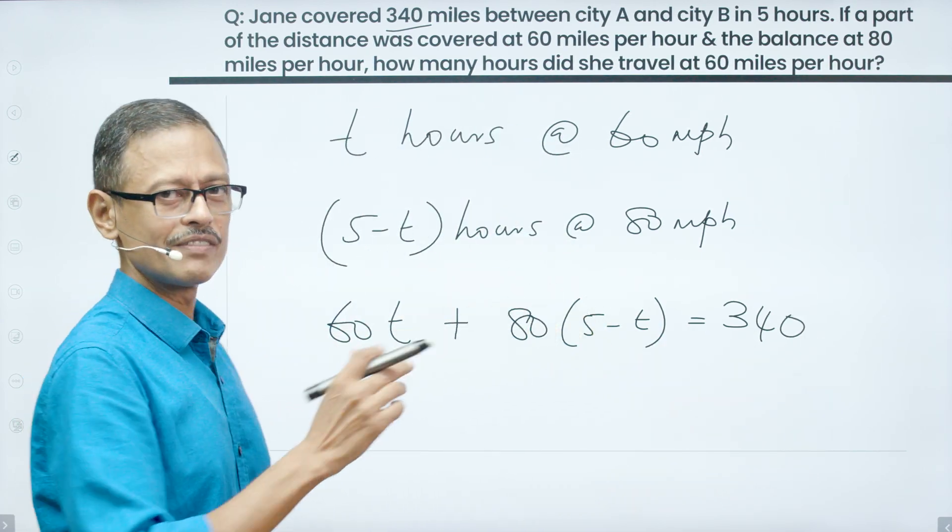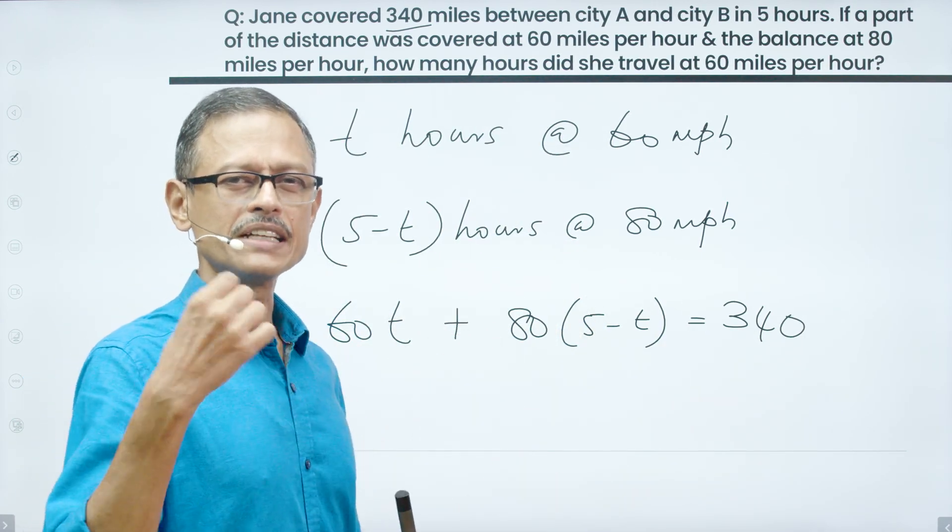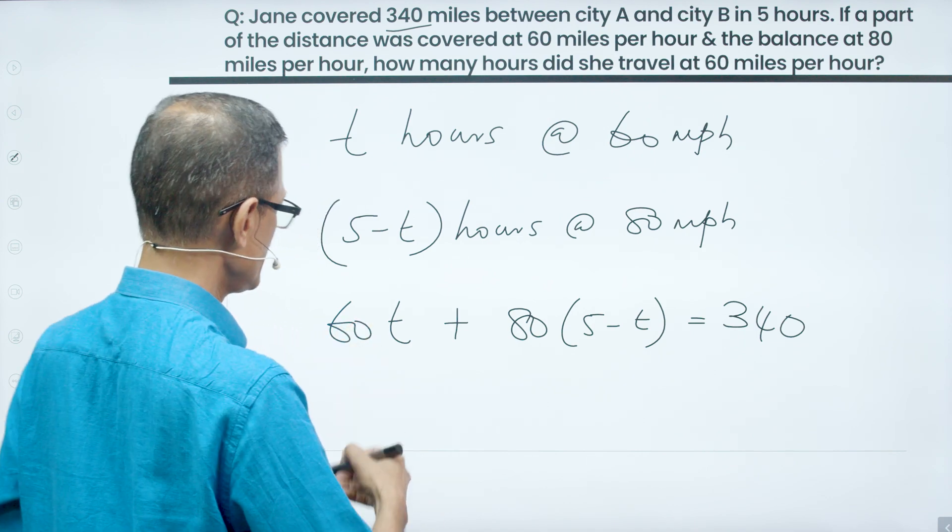So we see one equation, one variable. Solve for it. We'll have the answer. That's all it should take. About 35 to 40 seconds to solve this question. Quickly wrap it up.